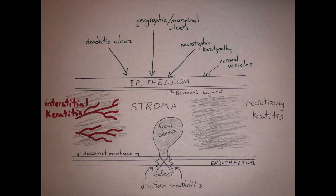Let's talk about herpes simplex signs. The patient could have primarily blepharitis and/or follicular conjunctivitis. Make sure we look for those follicles because it's classically a virus. But we can also have, in the epithelium, a classic dendritic ulcer. In addition to that, we can have a geographic ulcer, which is a very wide ulcer, and a marginal ulcer, which is close to the limbus.